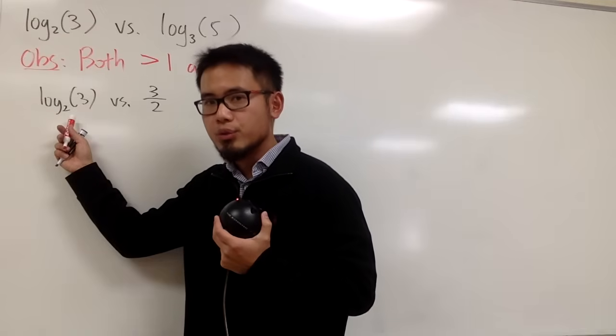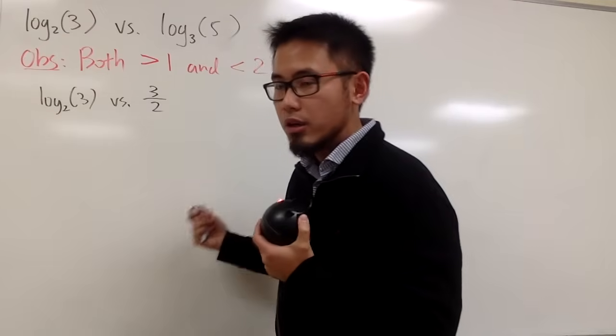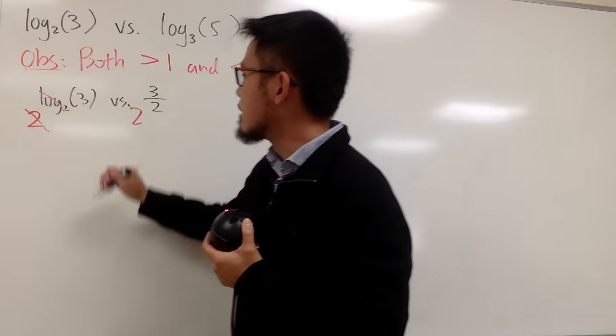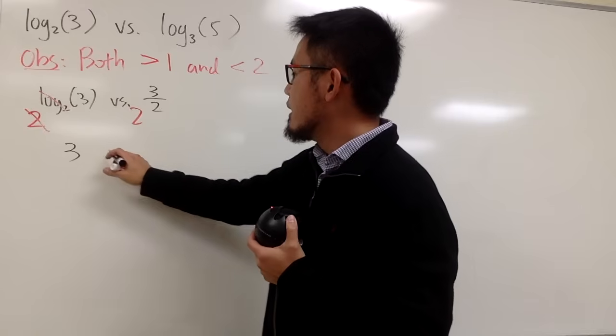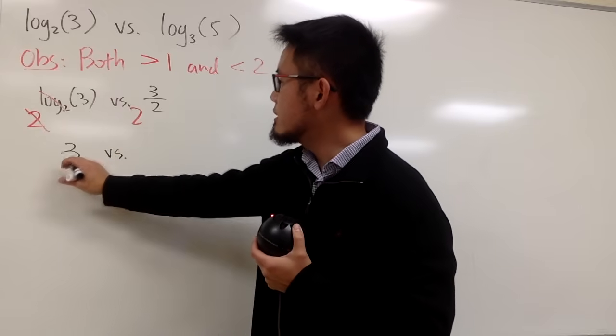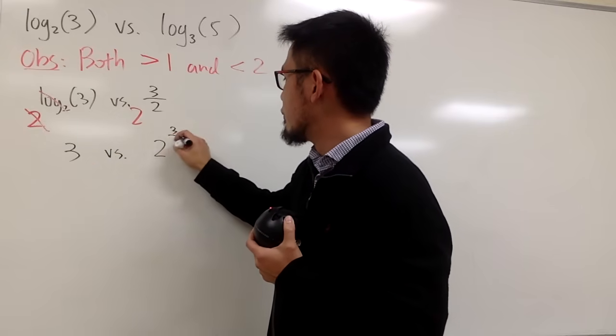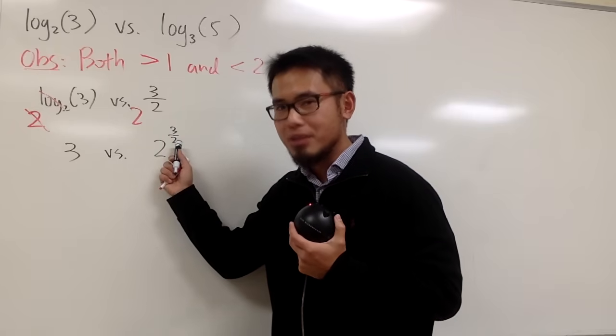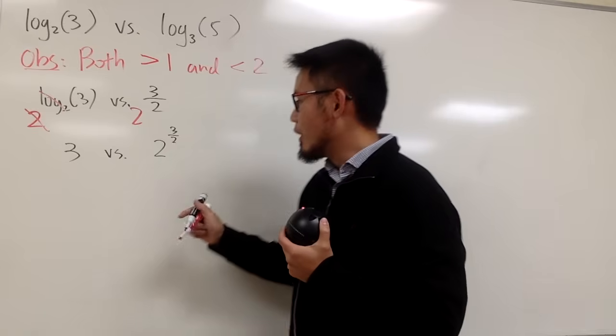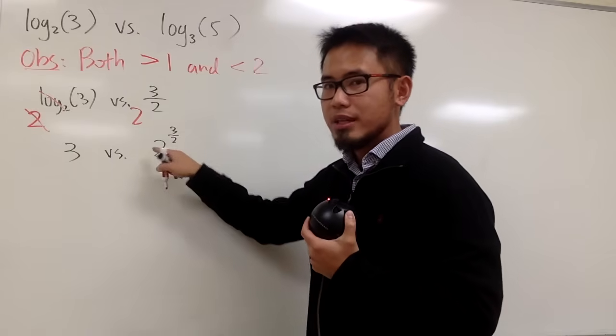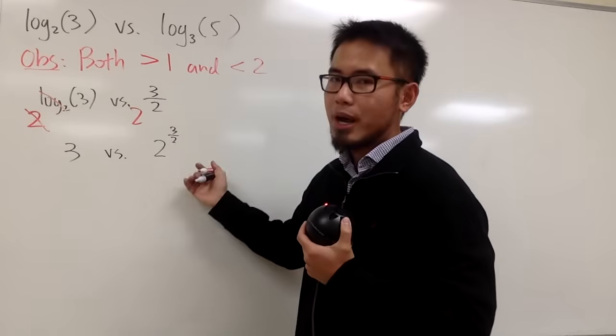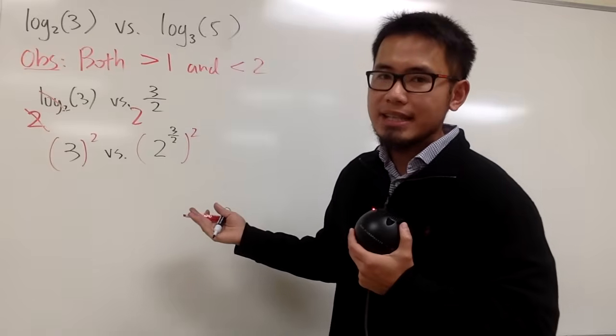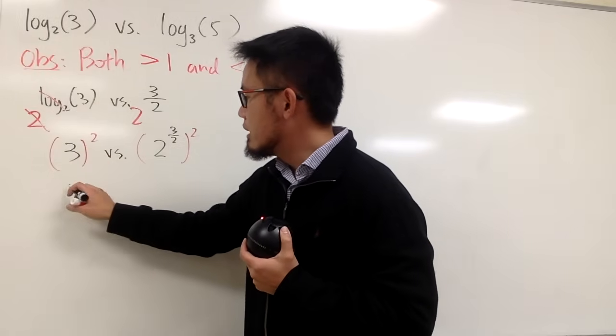And let's just play around with some algebra. First of all, I see that the log base 2 is bothering me. I can do what we did earlier. I can just do 2 to this power and 2 to that power. This and that will cancel. And I have 3 on the left-hand side. And I just have to compare this with 2 to the 3 over 2 power. Unfortunately, this exponent right here is bothering me. What can I do? Well, this is 3 over 2 power. It's just that you take the square root of 2 to the third power. What we can do is, now, take the square on both sides. And on the left-hand side, 3 squared is 9.